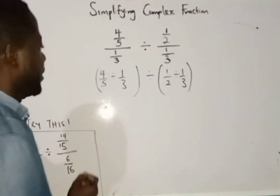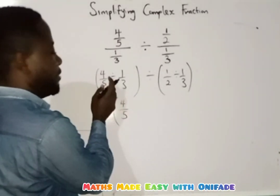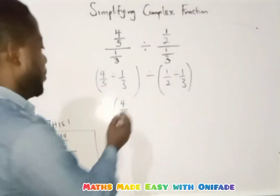Then the next thing I am going to do, I am going to say 4 over 5 that the division sign will change to multiplication.